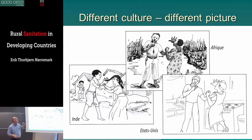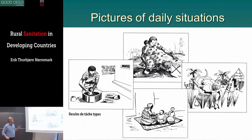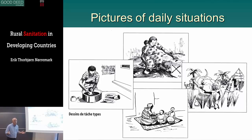Even for Africa, if you go to West Africa or East Africa, you might need to change the picture because people dress differently and houses are different. These are examples of pictures of daily situations — washing, feeding the children, working in the field, and in the top picture, a mother taking water from a dirty water source and putting it into the water container. These pictures animate discussions, for example asking what women do during the day, and then you can go into water quality issues using another set of pictures.